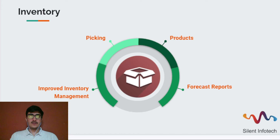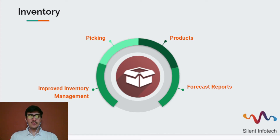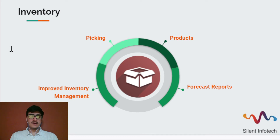You can now mark products as favorites so that they appear at the top of the list. You can improve the product labels for more information, and there is an enhanced forecasting report. Odoo now supports GS1 standards, and you can also scan the product from the home screen to get the location and description of the product.